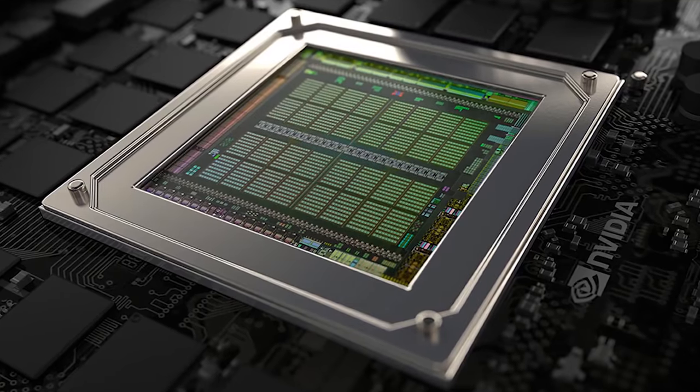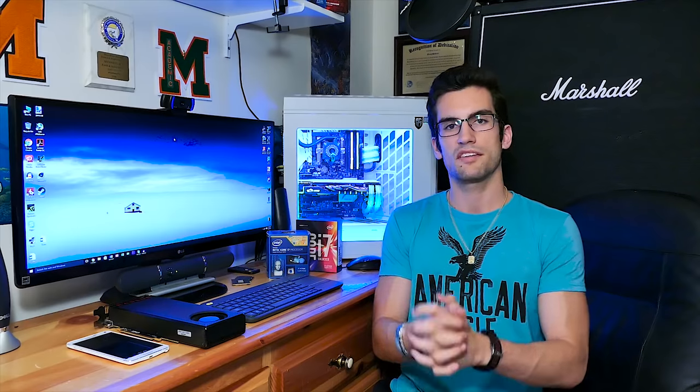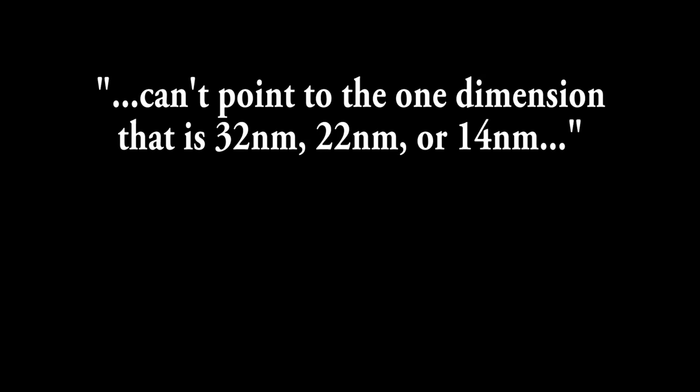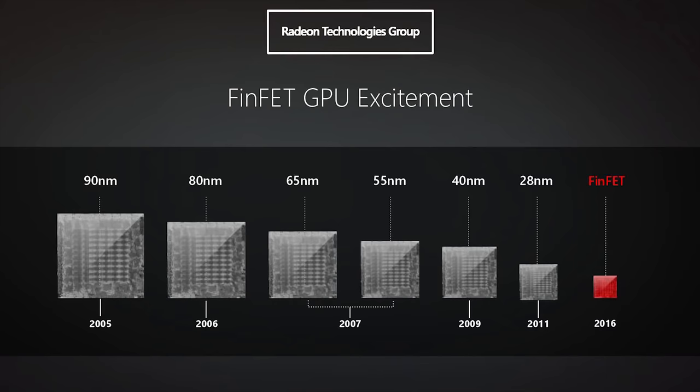Once upon a time this length actually meant something — typically the length of the transistor gate. But as Senior Fellow and Technology and Manufacturing Group Director at Intel, Mark Bohr, proclaims, he currently 'can't point to the one dimension that's 32 or 22 or 14nm on any of these processors.' Some dimensions are smaller than the stated node name, and others are larger. By today's standards, these lengths are more like milestone indicators for companies.